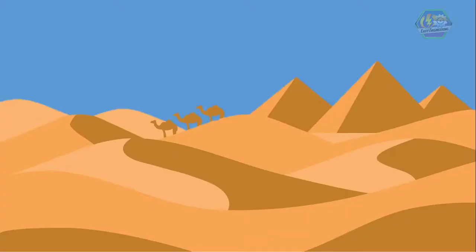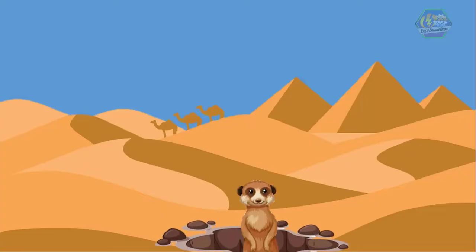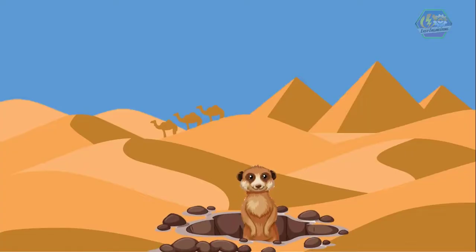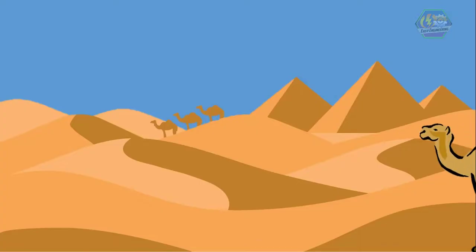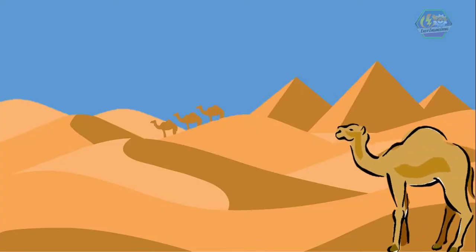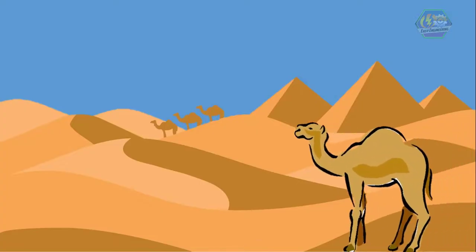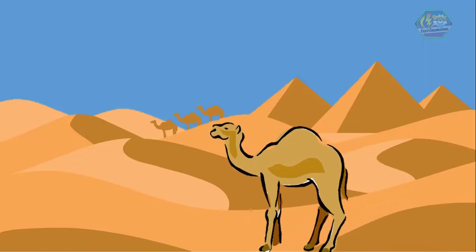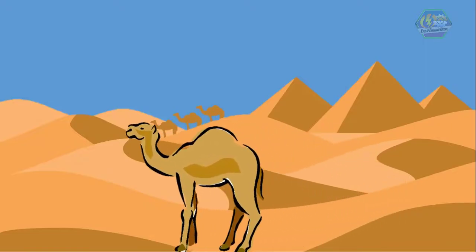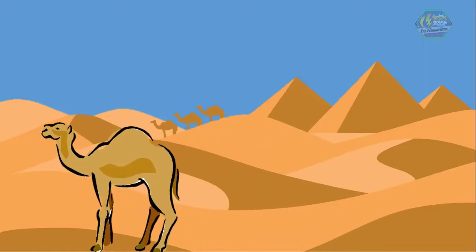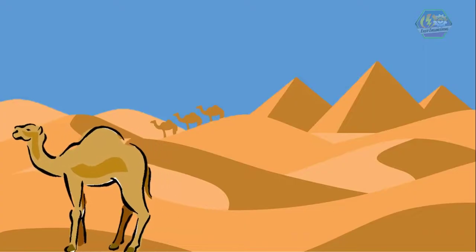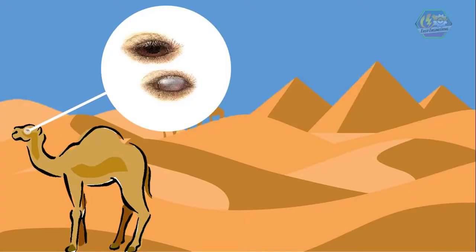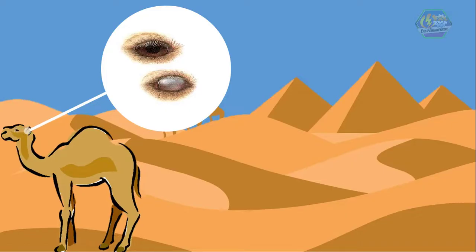Animals like the bobcat or the meerkat learn to dig in the sand to get away from the heat. The camel is another famous desert animal. It has humps where it can store fat and water so it will not easily go thirsty. The camel also has special eyelids and eyelashes for protection of its eyes from the sand.